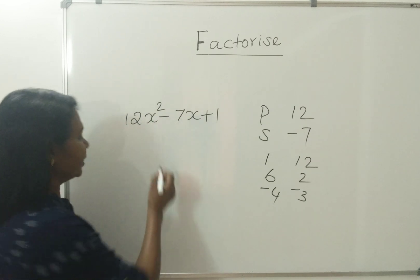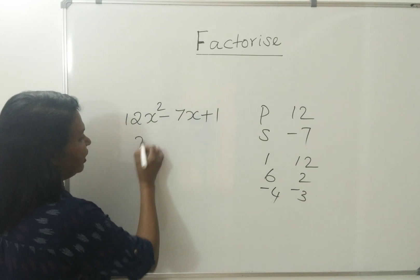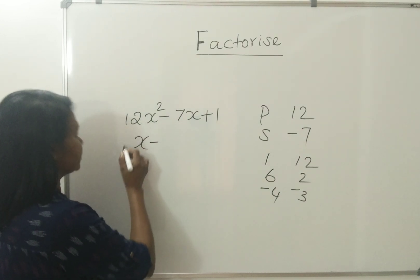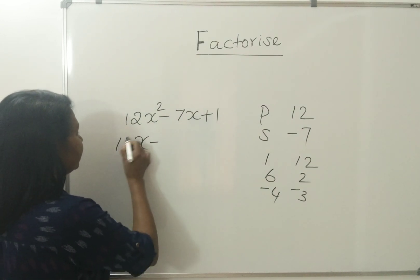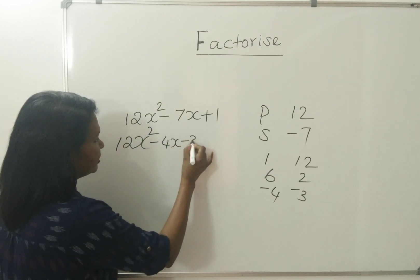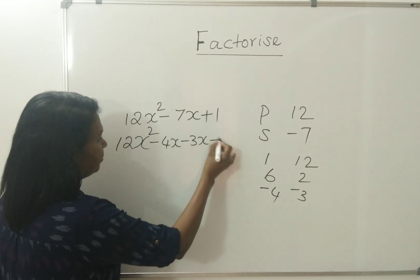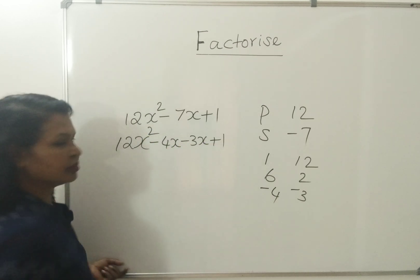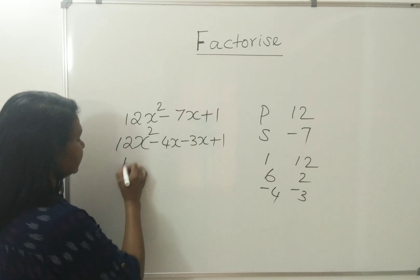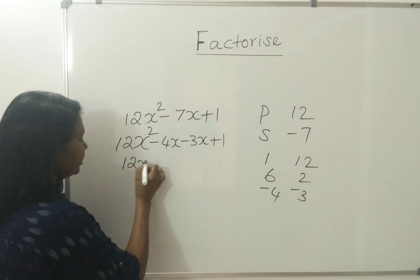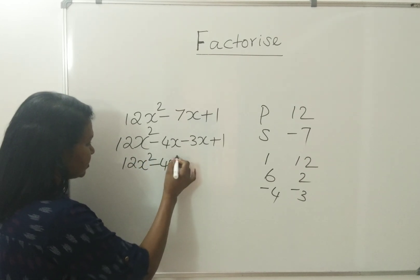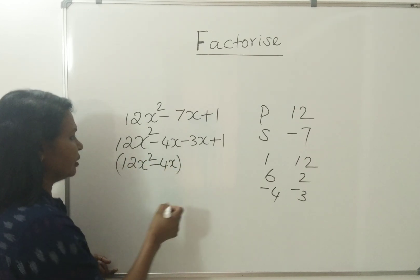So you can write it: 12x equals x minus 4x minus 3x plus 1. Now group here: 12x squared minus 4x as one group.